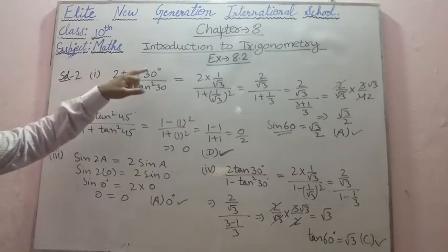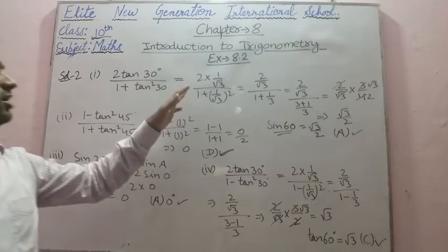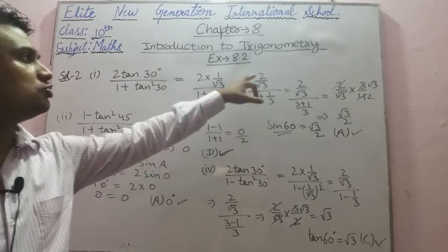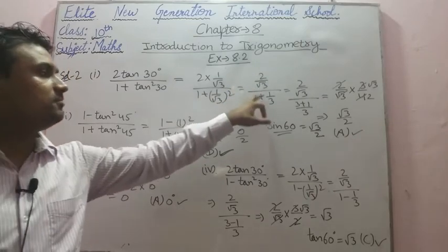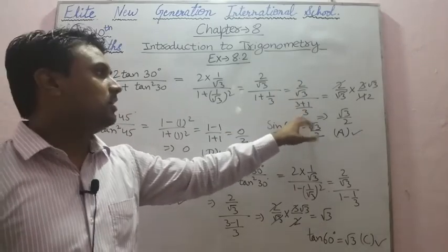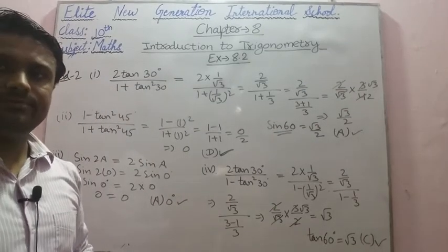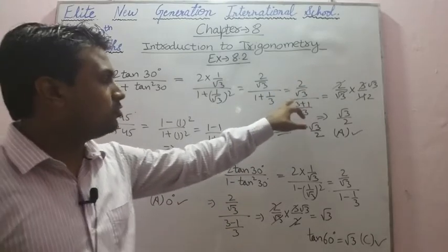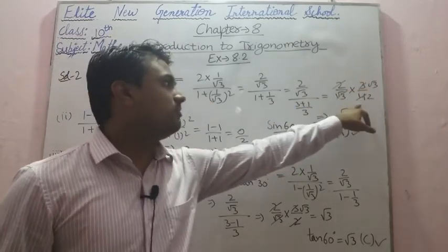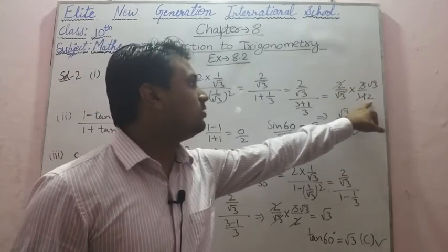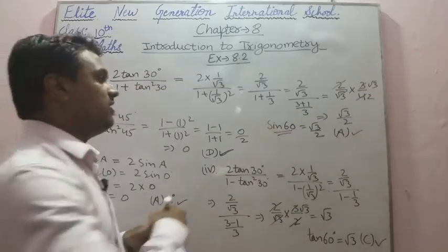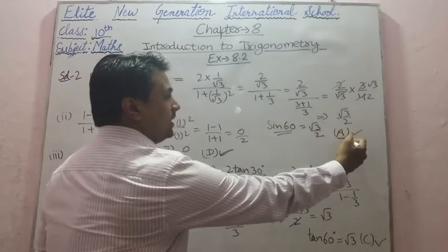Question 2, first part: 2tan30° / (1 + tan²30°). Putting the value of tan 30° = 1/√3: numerator = 2/√3, denominator = 1 + 1/3 = 4/3. So the expression = (2/√3) × (3/4) = √3/2. Since sin 60° = √3/2, option A is correct.